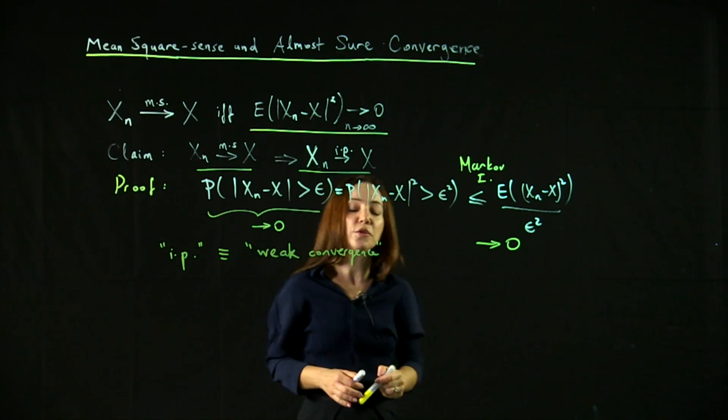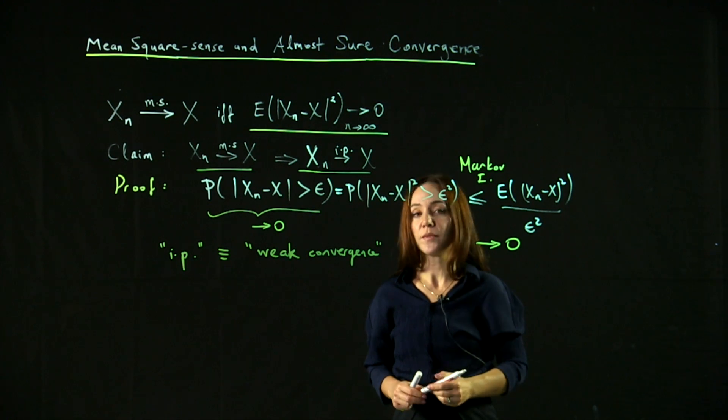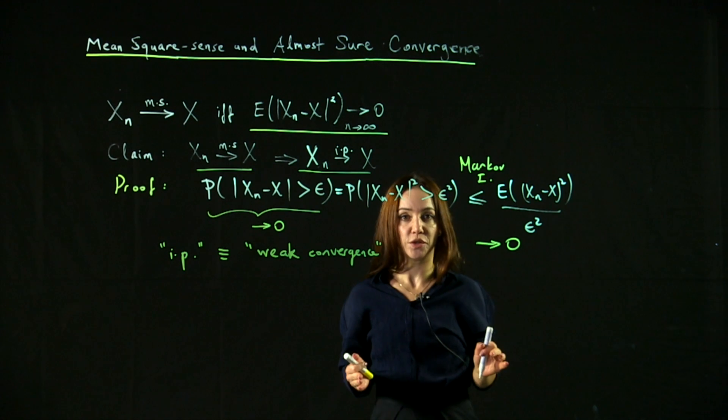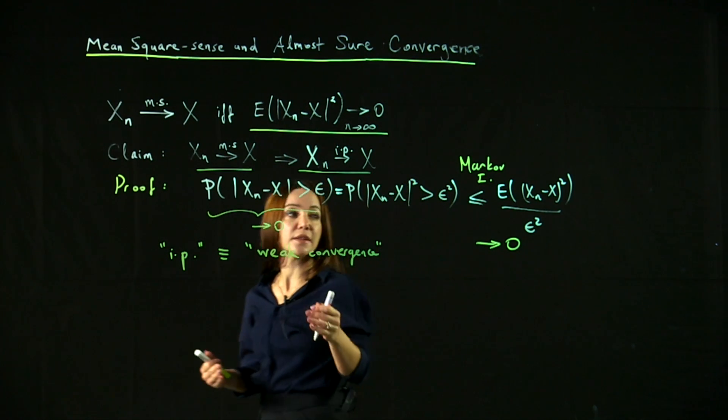Are there similarly strong forms of convergence like mean square convergence? A very strong notion of convergence is almost sure convergence or convergence with probability one. Let's define that next.